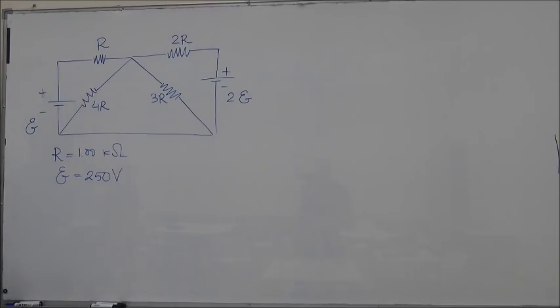In this problem we are given a DC circuit which consists of four resistors connected in this way, and then two different EMFs, one E and one 2E. We are given the values of the resistances.